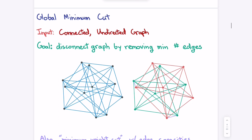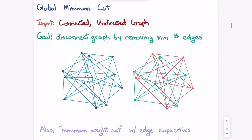The goal is: given some undirected graph, delete the fewest number of edges so that the graph is no longer connected. Presumably the input is already connected — you can do a BFS check. You can also do a weighted version where you have edge weights and want to delete the minimum weight of edges.